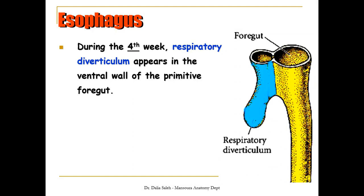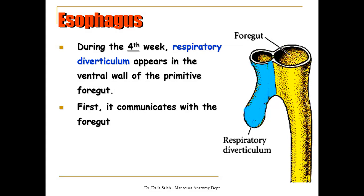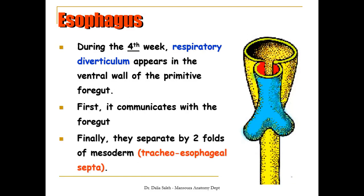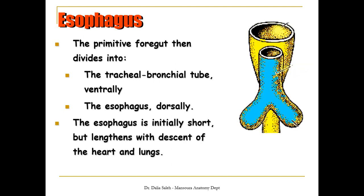Now let's talk about the development of the esophagus. During the fourth week of development, the respiratory diverticulum appears in the ventral wall of the primitive foregut. The foregut lies dorsally and the respiratory diverticulum lies ventral to it — at first they communicate with each other. Two folds of mesoderm called the tracheoesophageal septa will arise and approximate to each other, separating the foregut from the respiratory diverticulum. The primitive foregut is then divided into the tracheobronchial tube ventrally and the esophagus dorsally. Initially the esophagus is short but elongates with the descent of the heart and lungs downward.